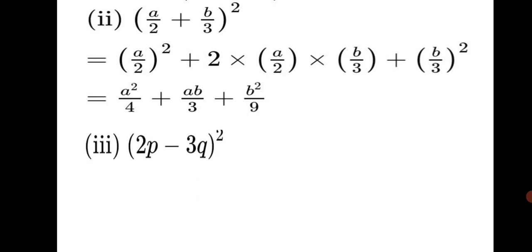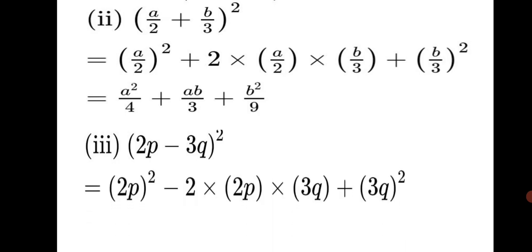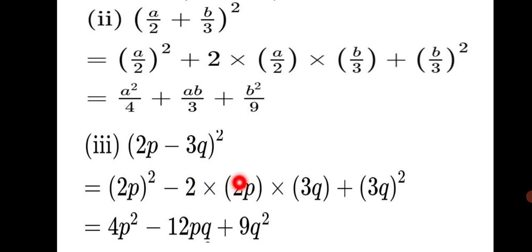Third sum: 2p minus 3q, the whole square. Using (a−b)² formula: (2p)² − 2×2p×3q + (3q)². Expanding: 4p² − 12pq + 9q². Remember, this uses the a minus b formula, so the second term is minus and the third term is plus.